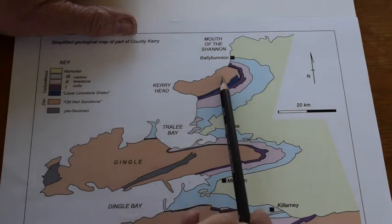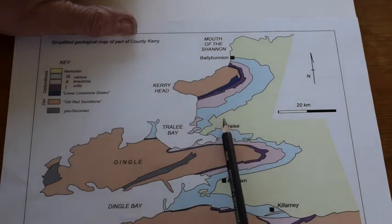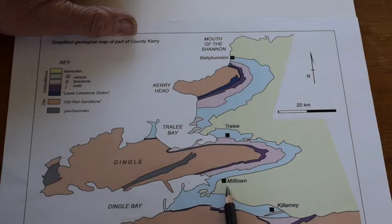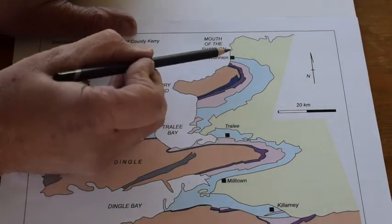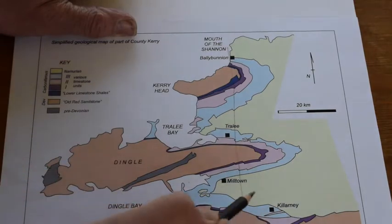We go from Namurian down through the Carboniferous to old red sandstone and back out again. As we go past Tralee we do the same thing - we go down through the stratigraphy into the old red sandstone that's continuous with the Dingle Peninsula and then we go back up through the stratigraphy. Then as we come off the southern end of the map we go back down into older rocks.